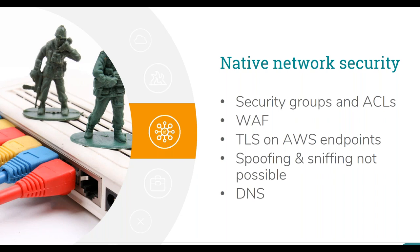There is more information in some of the re:Invent talks around networking if you're interested. Finally on DNS — it's often overlooked when it comes to networking but it's really critical. We have Route 53 in AWS which is massively scalable and highly available, with interesting controls including low TTLs and the ability to route traffic based on where it's coming from or latency.